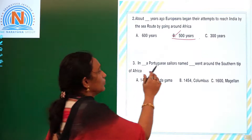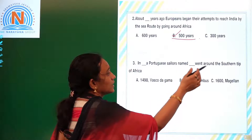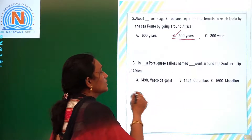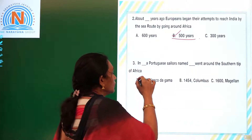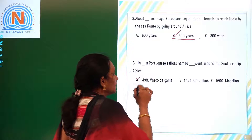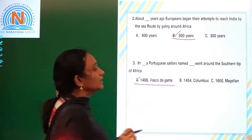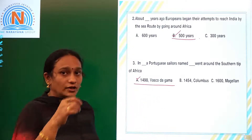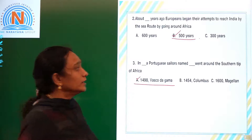A Portuguese sailor named Vasco da Gama went around the southern tip of Africa. In the year 1498, Vasco da Gama went around the southern tip of Africa in order to reach India.